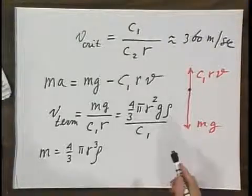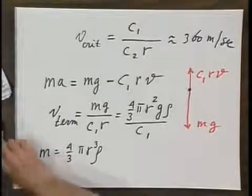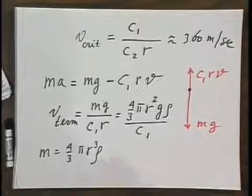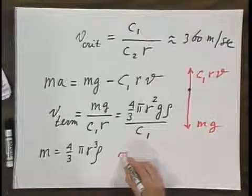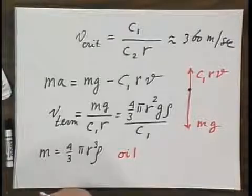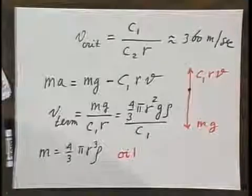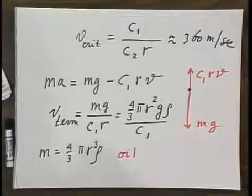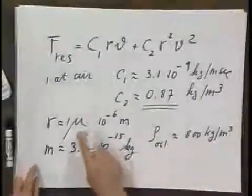And so you can calculate now what the terminal velocity is for this oil drop. And you will find that for our oil drop, I would remind you that it had a radius of 1 micron,